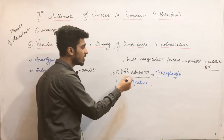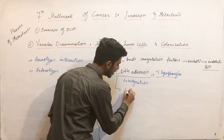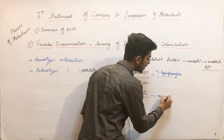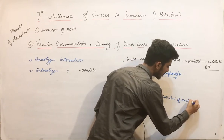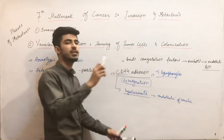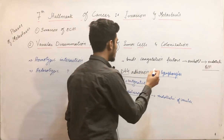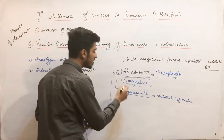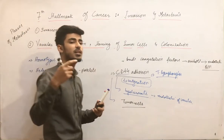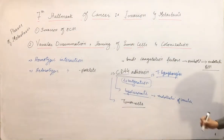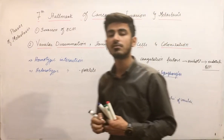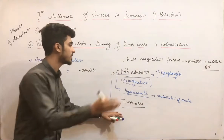This CD44 adhesion molecule or receptor binds with hyaluronate, which is present on the endothelium of the venules — that is how it helps T lymphocytes migrate to different sites in lymphoid follicles. In the same way, CD44 is also expressed by tumor cells, and in tumor cells, CD44 helps in metastasis to different sites. That's why tumor cells express CD44, just as T lymphocytes do, to facilitate migration to different metastatic sites.